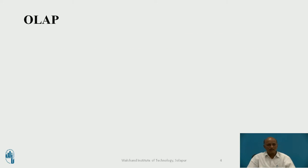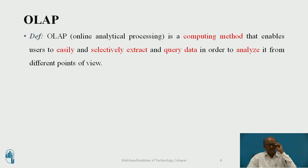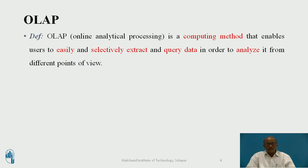First of all, let us see the definition of OLAP. Online Analytical Processing is a computing method that enables users to easily and selectively extract and query the data in order to analyze it from different points of view. It means extracting the data by making queries and doing analysis to get some inference — that is OLAP.